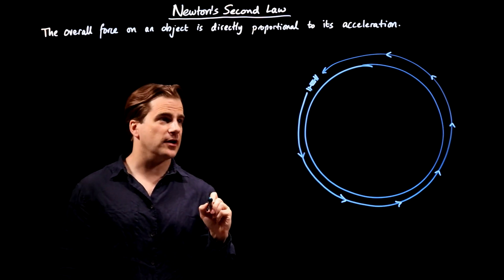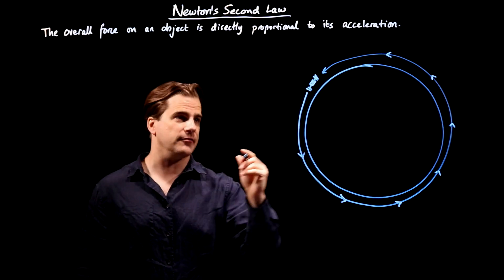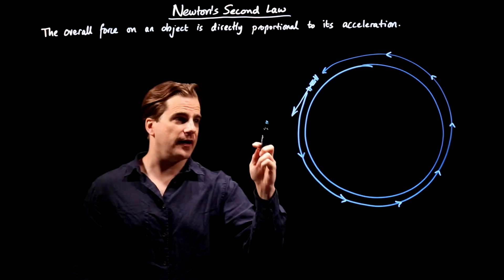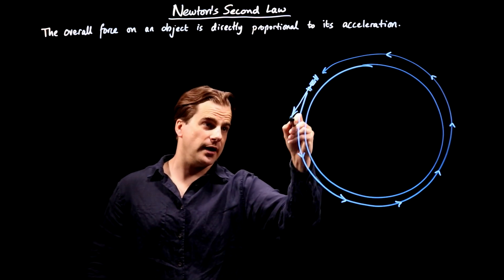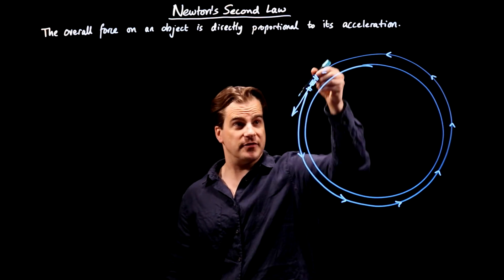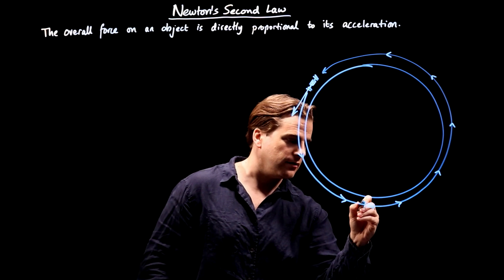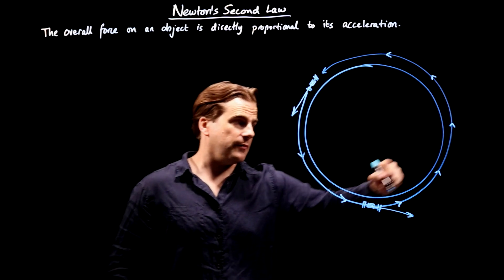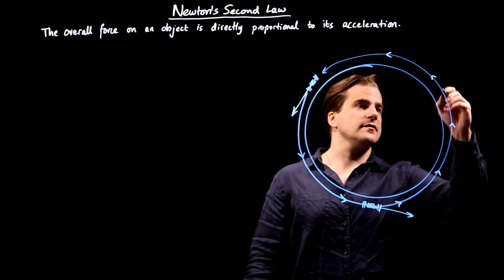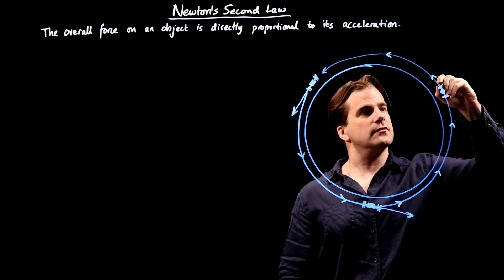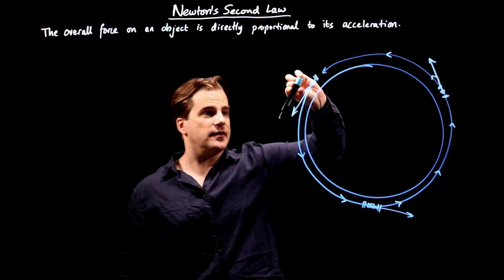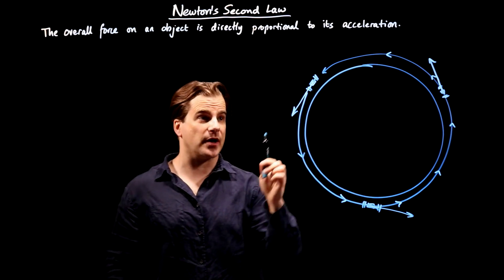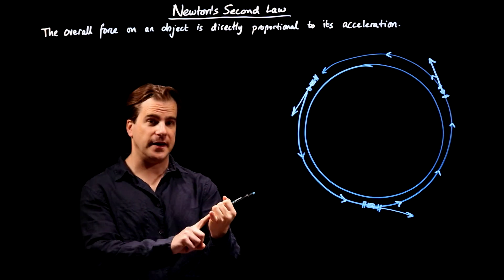At that particular point where I've drawn it, its instantaneous velocity — its speed and its direction — is like so. If you could somehow suddenly remove the Earth from existence, it would keep going in a straight line. The instantaneous velocity is the tangent to its path of motion. You can see that the direction of these arrows is different at every point. So its speed might be constant, but its velocity is continuously changing because its direction is continuously changing. And velocity is speed plus direction.